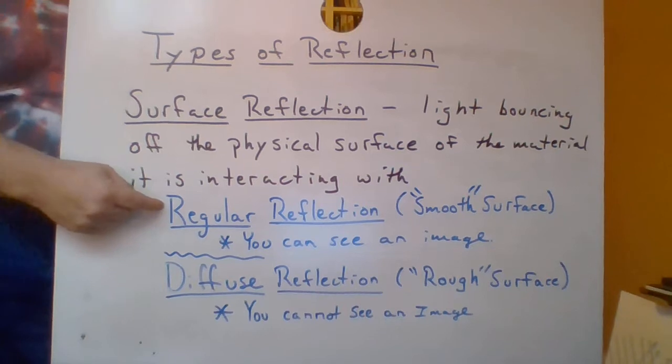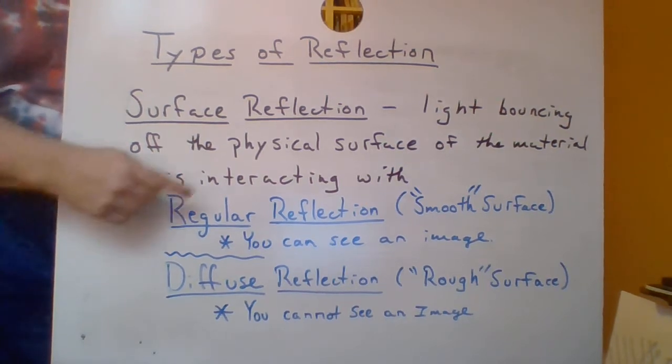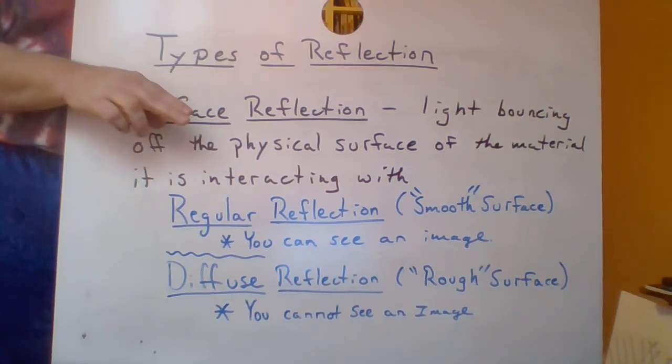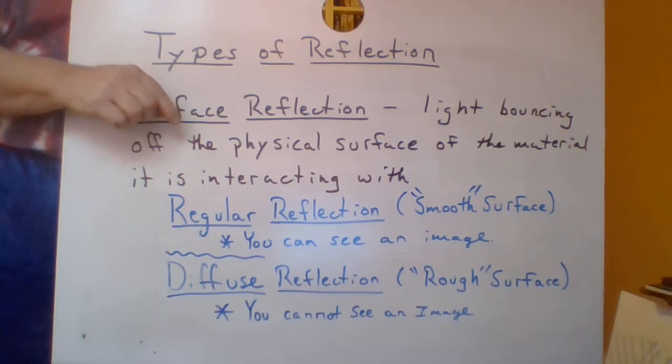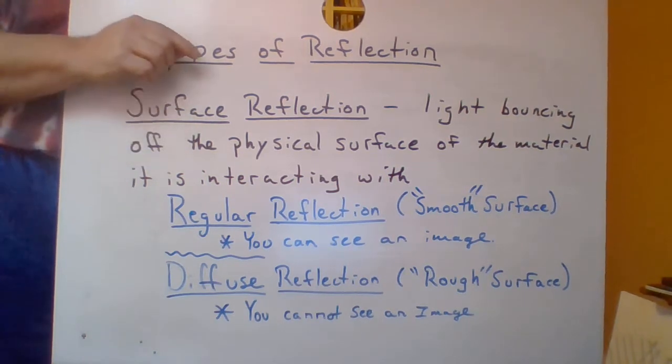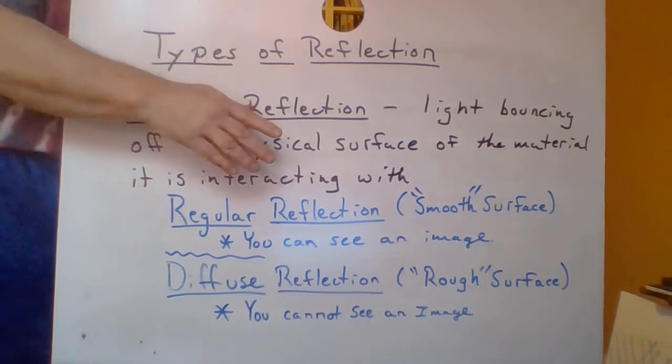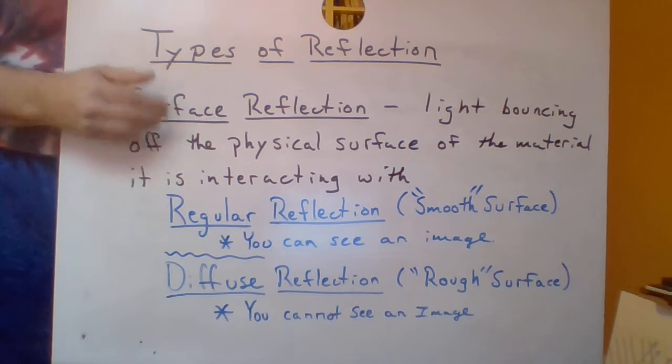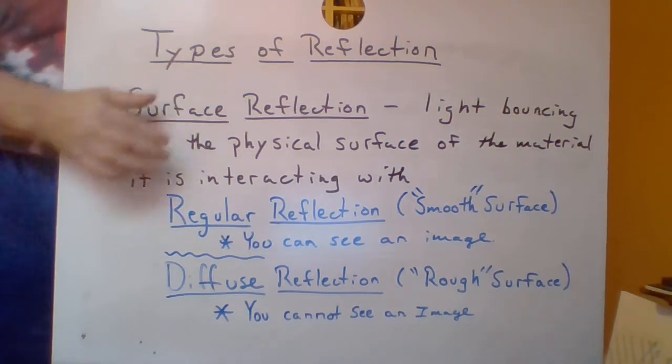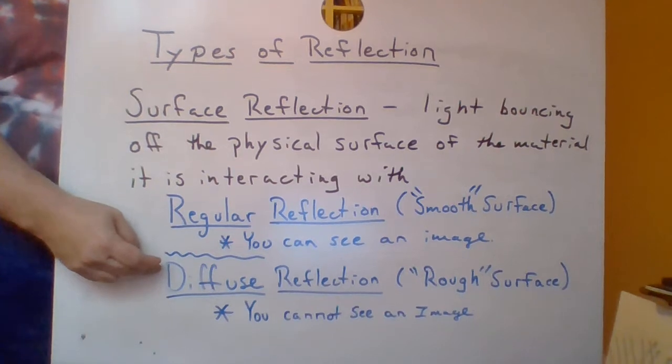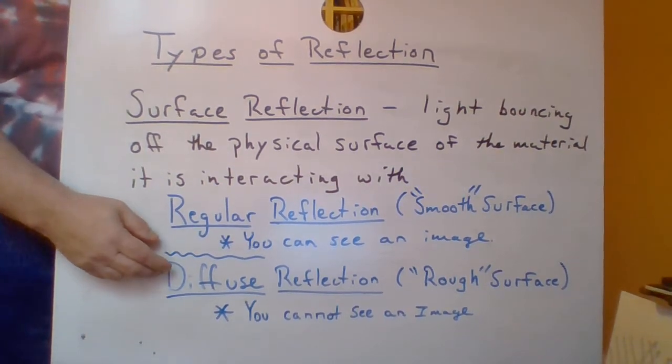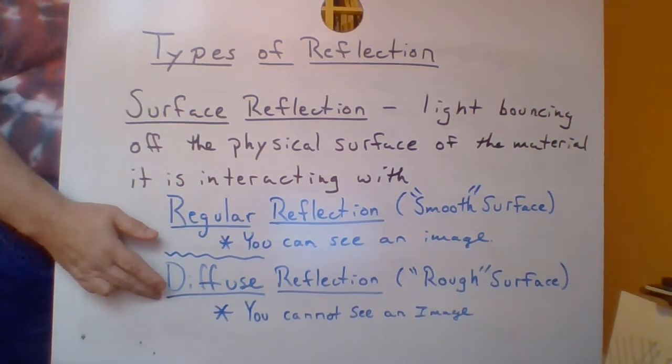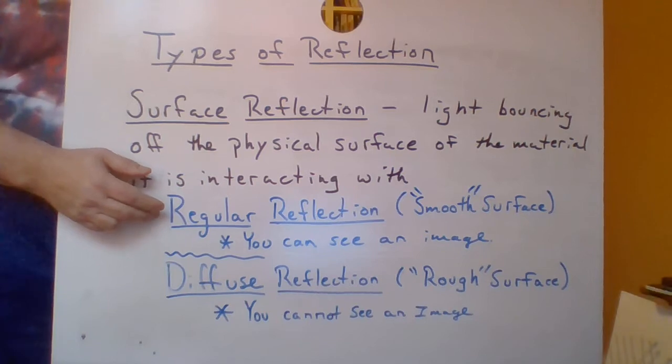We're just going to deal with what happens to the light that's coming off of the surface of the object. And for that, we have two types of reflection. We have regular reflection, which is off of a smooth surface. Now, smooth is in quotes because the smoothness of the surface is compared to the wavelength of the light that's hitting it. And then we have diffuse reflection. Diffuse reflection means you get scattering. You cannot see an image with a diffuse reflector. You can see an image with a regular reflector.